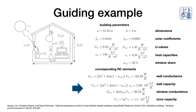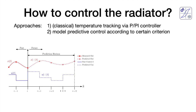The RC model parameters are derived from building parameters: dimensions, U-values determining insulation quality of walls and ceilings, solar coefficients indicating how much solar irradiation enters the building, and specific heat capacitances of individual materials. By these formulas you get the parameters for your RC model.